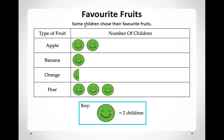Here they showed us a different type of information — our favourite fruit. We have apple, banana, orange, and pear. They tell us that each smiley face means two children like it. So let us count how many children like apples: one smiley face means two people, so counting two smiley faces gives us four children who like apples.